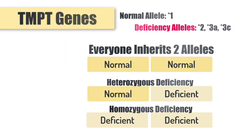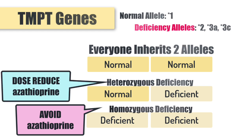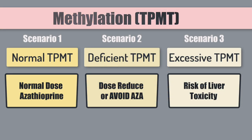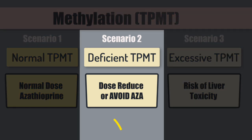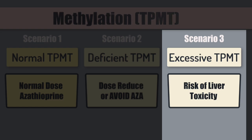So we check the genetics where available. If they have a homozygous deficiency, we avoid azathioprine. If they have a heterozygous situation, we can use azathioprine at lower doses. If no genetic TPMT deficiencies are detected, we use normal doses of azathioprine but remain on ready alert for any bone marrow suppression. Coming back to those three scenarios — we've covered scenario two thoroughly. Now I want to shift gears to discuss the complete opposite: scenario three, where we have a very enthusiastic TPMT enzyme methylating away, and this comes with its own set of problems.